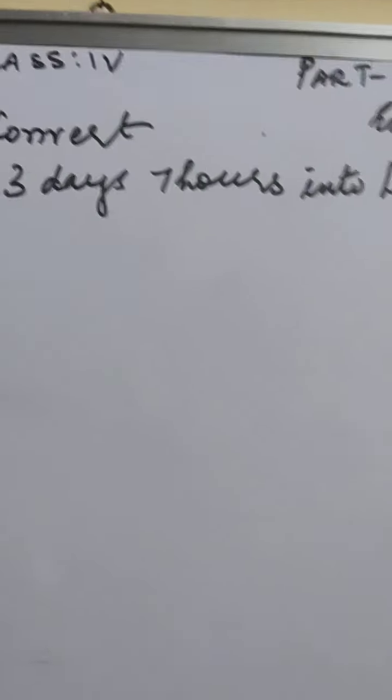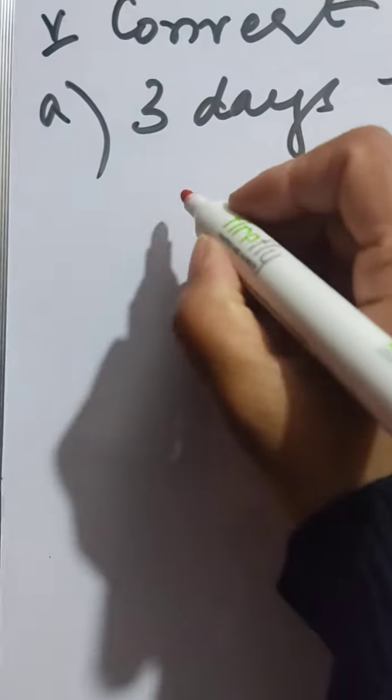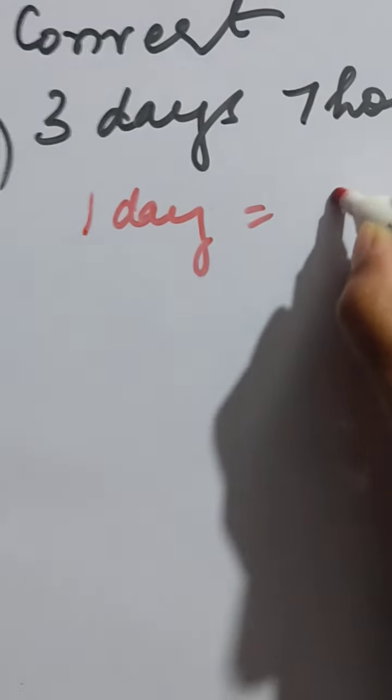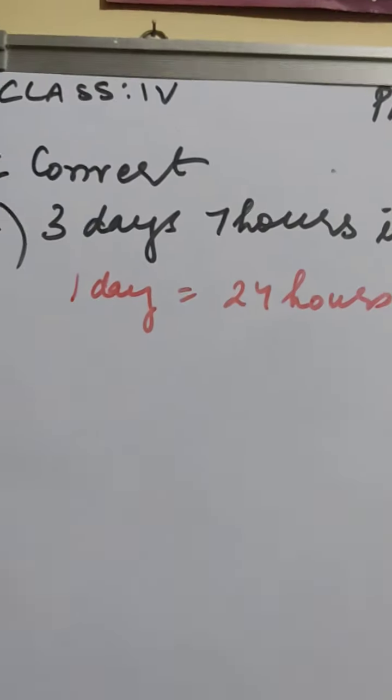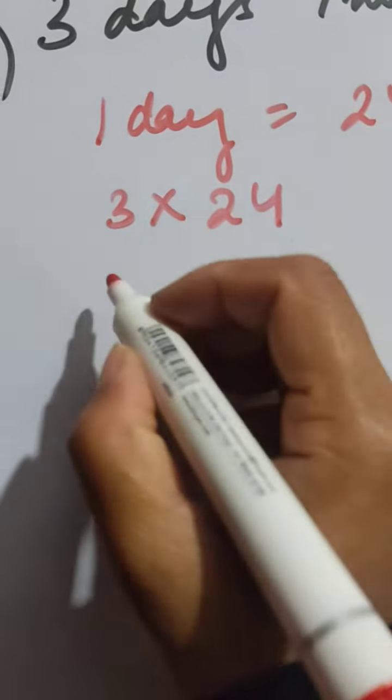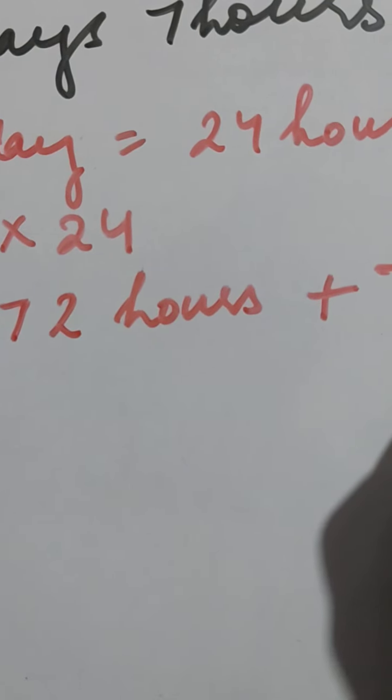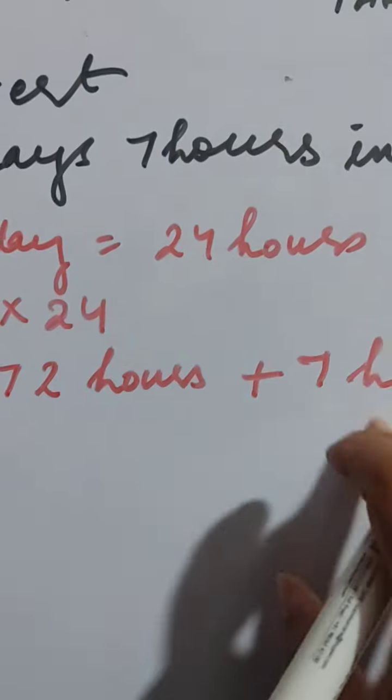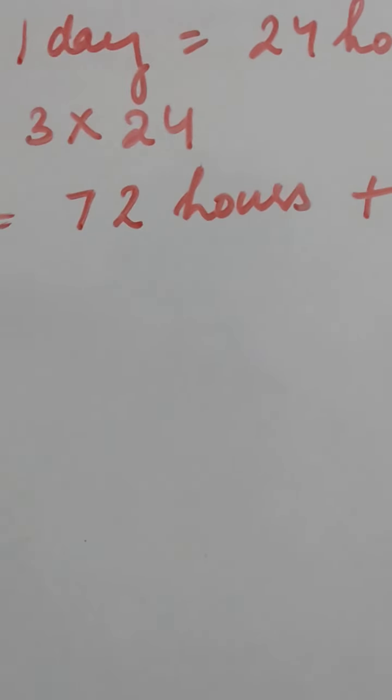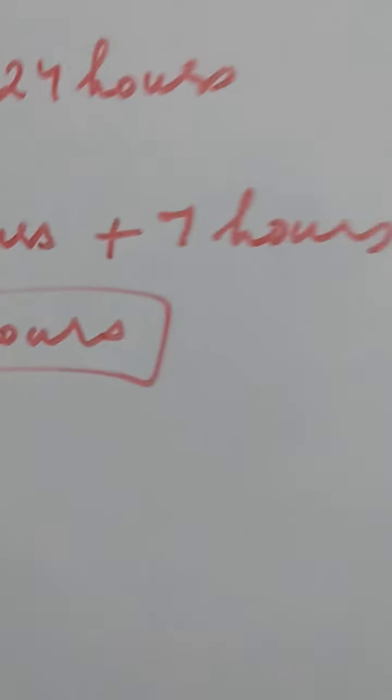Now we will go to the 5th question. In the 5th question we have convert 3 days 7 hours into hours. We have to see the relationship between days and hours. Days is a bigger unit and hours is the smaller unit. So to convert bigger unit to smaller unit, again we are going to multiply. So first write the relation. One day is equal to 24 hours. One day has 24 hours and half day has 12 hours. So 3 multiply by 24 is 72 hours plus 7 hours. Because hours is already given and we are going to add the similar unit. So this becomes 79 hours. See? Very simple.